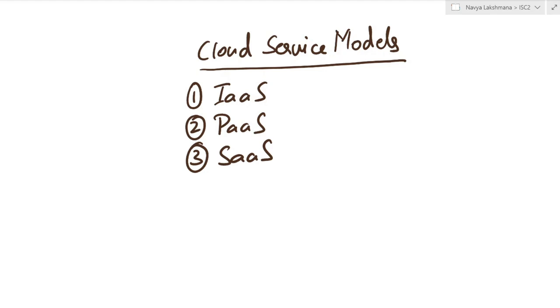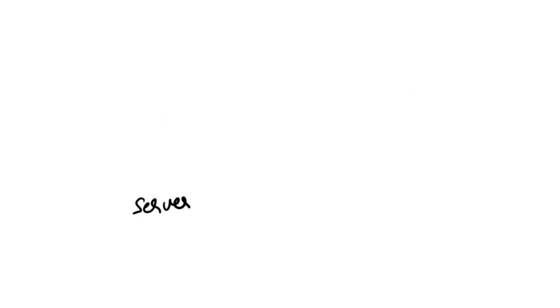To understand this, let's see how setting up a server works in the cloud. First, there is a server with memory, motherboard, and CPU. For connectivity to connect everything, we need routers, switches, and internet — that is the connectivity part. And then we have storage, which is HDD and SSD.